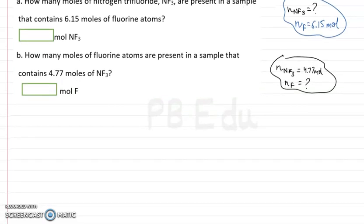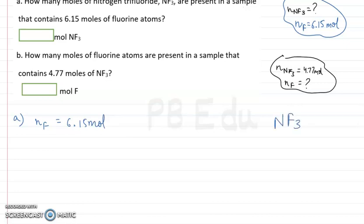First we will do part A. In part A we have the number of moles of fluorine, that is 6.15 moles. If we see the compound NF3, we can see that in 1 mole of NF3 there are 3 moles of fluorine atoms.